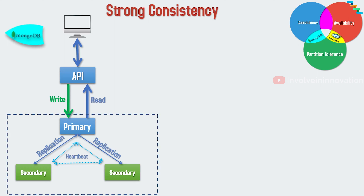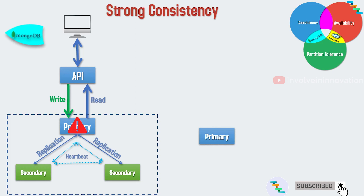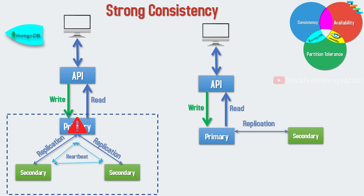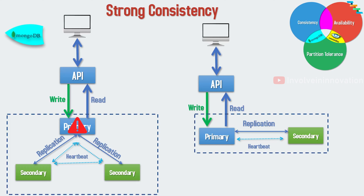Heartbeat is used to identify failed nodes among the replica set. These replica nodes send a ping to each other every 2 seconds. If any node doesn't ping back within 10 seconds, the other nodes mark it as inaccessible. If the primary node becomes unavailable, the MongoDB cluster initiates a primary node election among the replica set and elects a new primary in a few seconds. The cluster also takes care of switching over client connections and retrying failed operations.